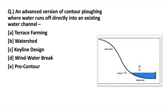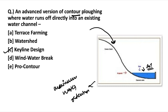Moving to the next question: an advanced version of contour plowing where water runs off directly into an existing water channel. The land is plowed in such a way that it creates a level or pit-like structure where water gets collected. When water erosion occurs, the water flows and gets collected in this area — nutrients and soil get collected, and this water can be used for farming. This method is known as key line design and is used for maximum water retention.